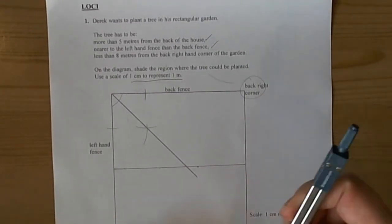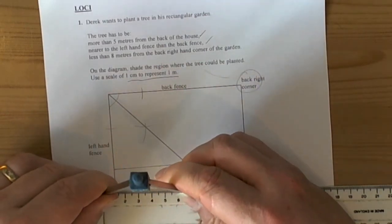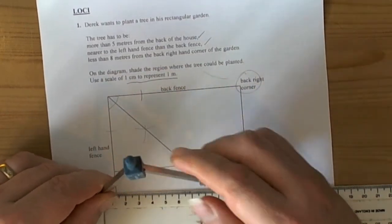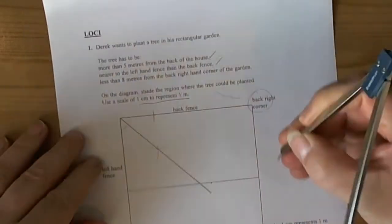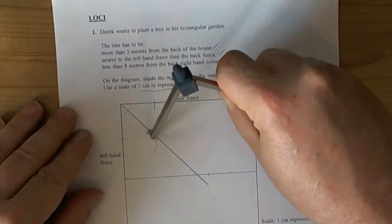So we have to open our compasses at eight centimetres. Again, because the scale is one centimetre to a metre. And put our compass point down on the right corner. And then draw our arc.